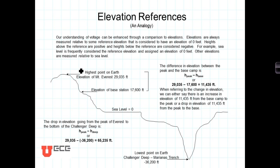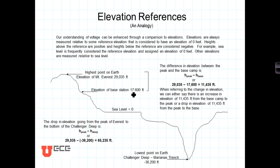Elevations above sea level are given positive values and elevations below sea level are typically given negative values. For example, Mount Everest, the highest point on earth, has an elevation of about 29,035 feet above sea level. Similarly, the elevation of the base station is 17,600 feet above sea level.